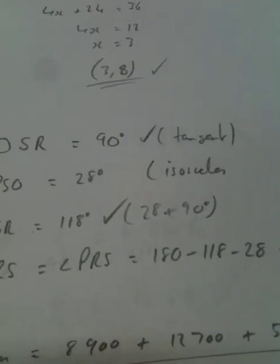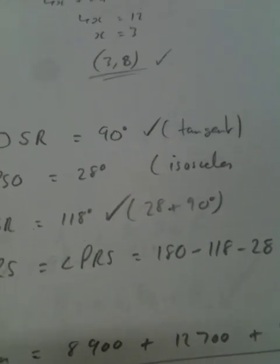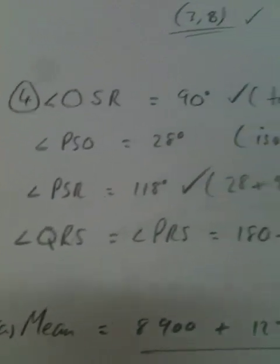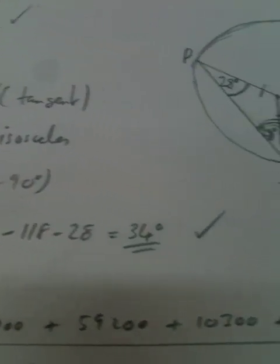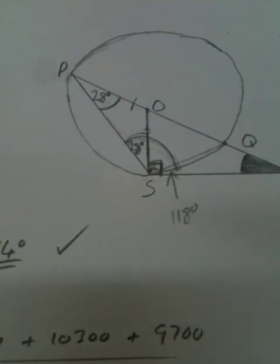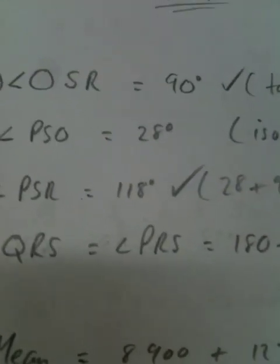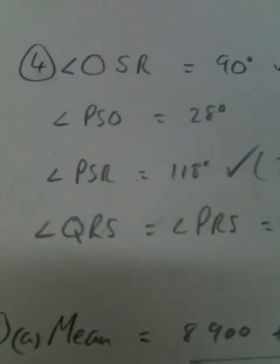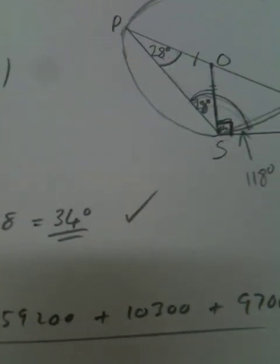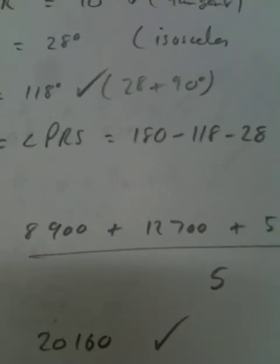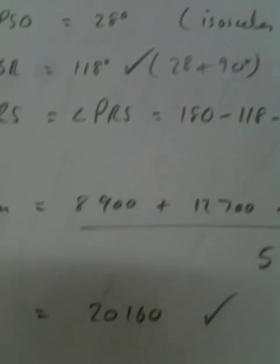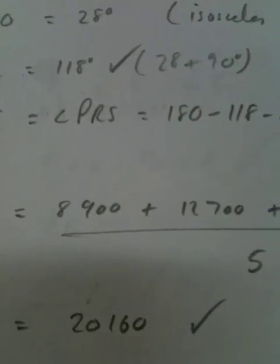Question five. One weekend, the attendance at five Premier League football matches were recorded. So, it's 8,900, 12,700, 59,200, 10,300, 9,700. Part A, calculate the mean attendance. To find the mean, you add the values up, divide by how many values. So, if we add all of those up and divide by five, it comes to 20,160.